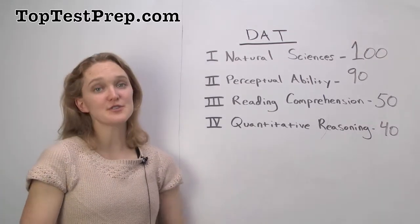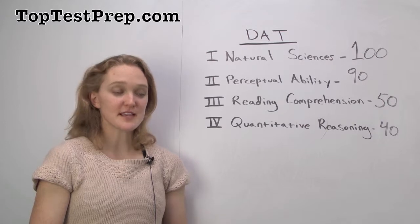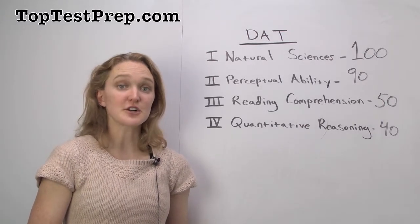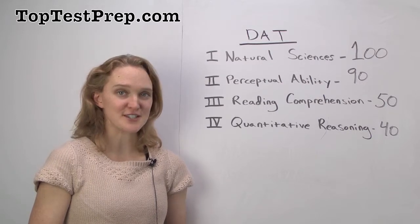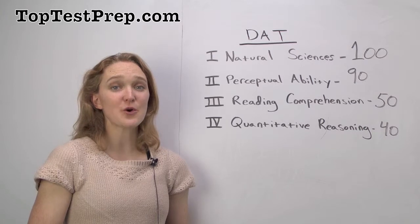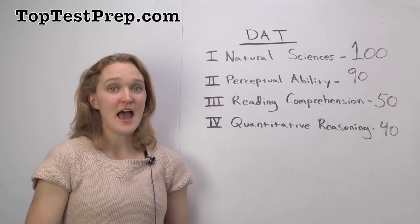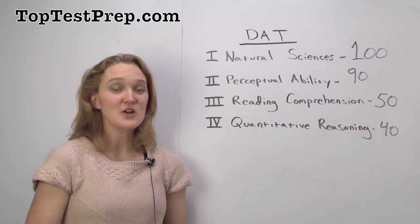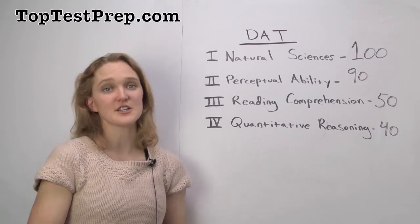First, you have natural sciences, and that's going to break down into general biology, for which there are 40 questions, general chemistry, for which there are 30 questions, and organic chemistry, for which there are another 30 questions. That's a grand total of 100 questions, and you know that natural sciences are very important for being a dentist, so that's why there's so much emphasis on this section of the test.